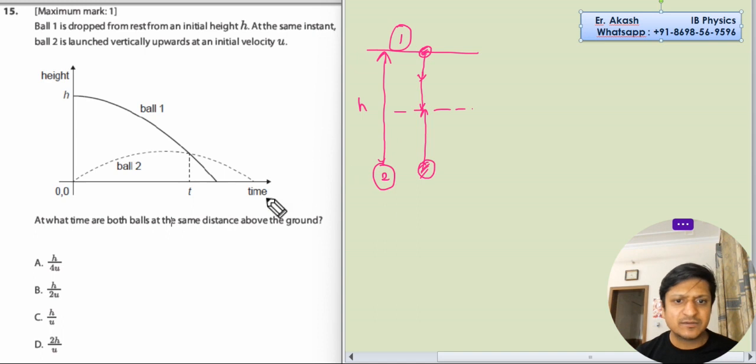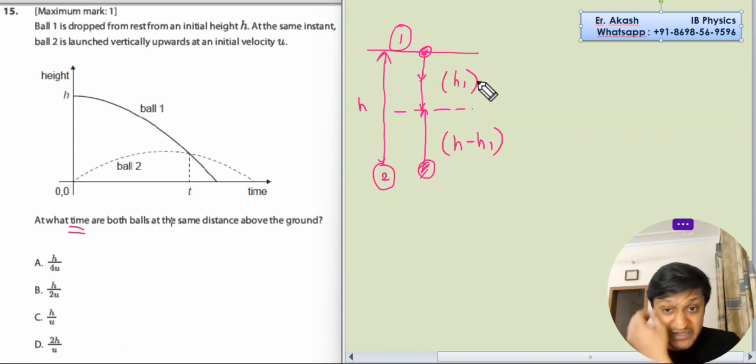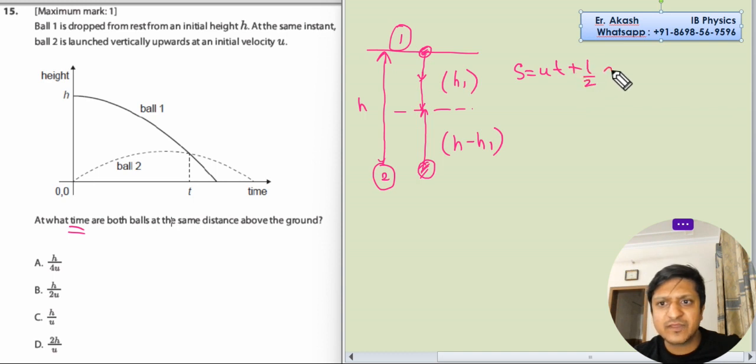So what will be the time? For this question, first see suppose that this is h1 height, so this height will be h minus h1. We have assumed that it is h1. The second SUAT equation, s equals ut plus half at square, will be used in this question. How it will be used, just look into it. First we will assume that ball is here and we will use this SUAT equation for this height.